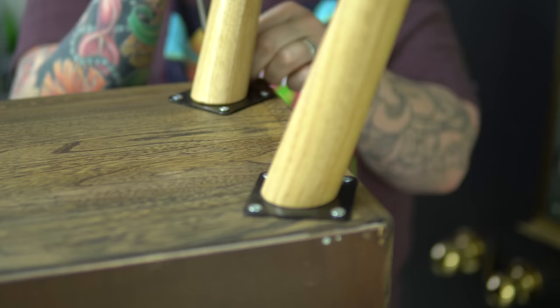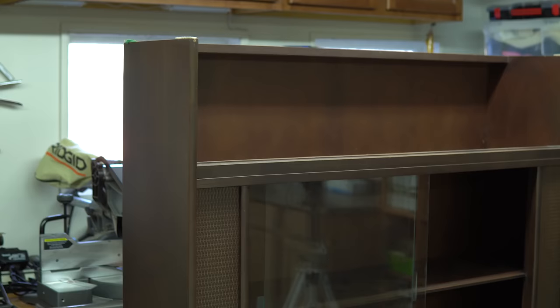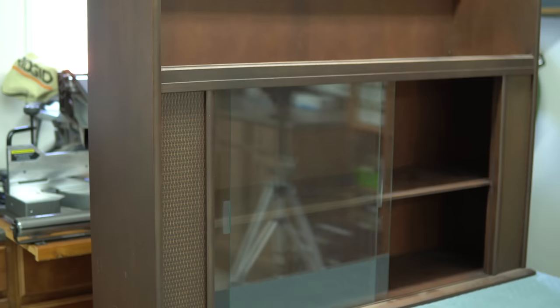Alright, let's have a look at what we started with. This hutch top was a mix of wood and plastic, shown upside down here of course, with sliding glass doors that I couldn't remove.